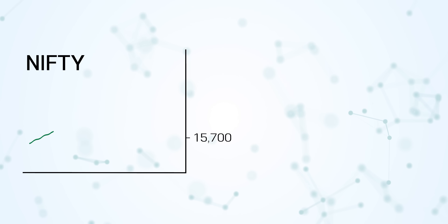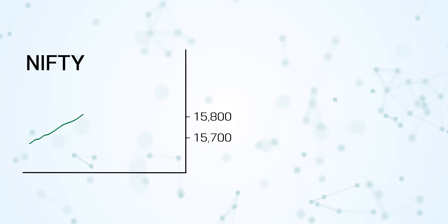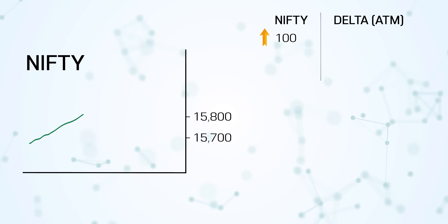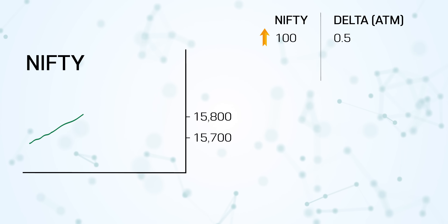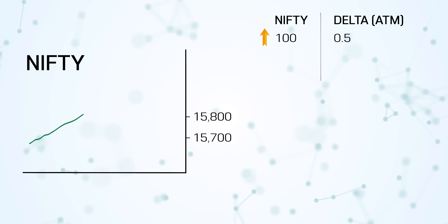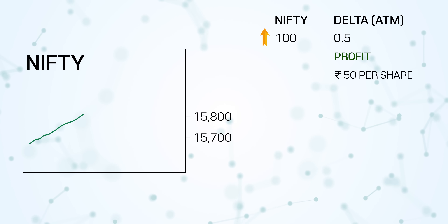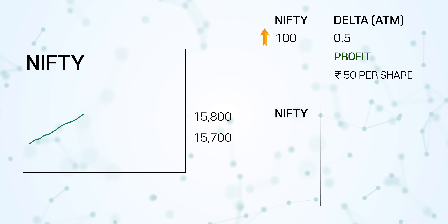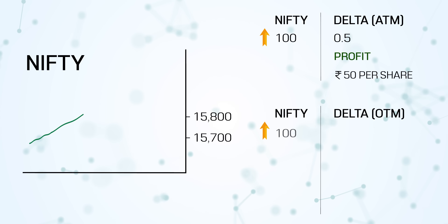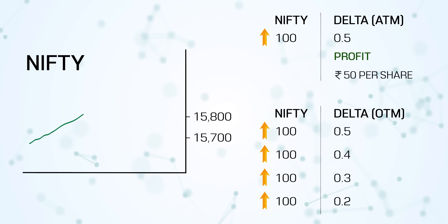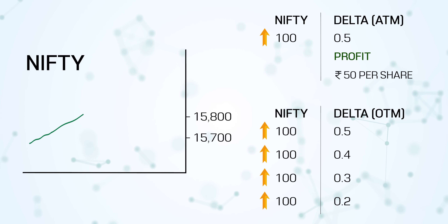That is where Delta comes in. Delta tells you: if Nifty goes up by 100 points tomorrow, how much will your call option go higher? If you hold an at the money call option, the delta is 0.5, which means if Nifty goes up by 100 points, the at the money call option will go up by 50 points — giving you 50 rupees profit per share. For out of the money options, depending on how far out you are buying, the delta keeps going down. There are some softwares which actually show you the delta.